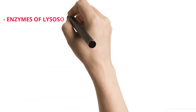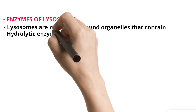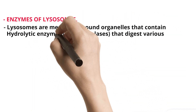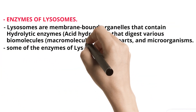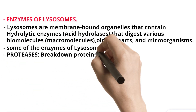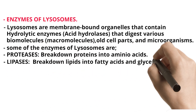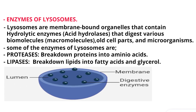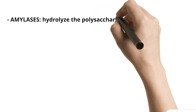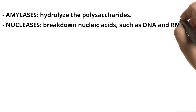Enzymes of Lysosomes: Lysosomes are membrane-bound organelles that contain hydrolytic enzymes — acid hydrolases — that digest various biomolecules, macromolecules, old cell parts, and microorganisms. Some of the enzymes of lysosomes are: Proteases — break down proteins into amino acids. Lipases — break down lipids into fatty acids and glycerol. Amylases — hydrolyze polysaccharides. Nucleases — break down nucleic acids, such as DNA and RNA, into nucleotides.